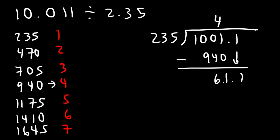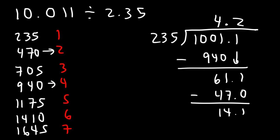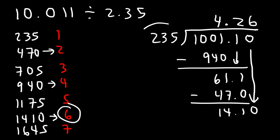Since 235 doesn't go into 61.1, we add a decimal point and treat this as 611. 235 goes into 611 at least two times — 235 times 2 is 470, so 235 times 0.2 is 47.0. Subtracting 61.1 minus 47.0 gives 14.1. Bringing down a zero gives 14.10, which we treat as 1410. Since 235 times 6 is 1410, 235 times 0.06 equals 14.10.